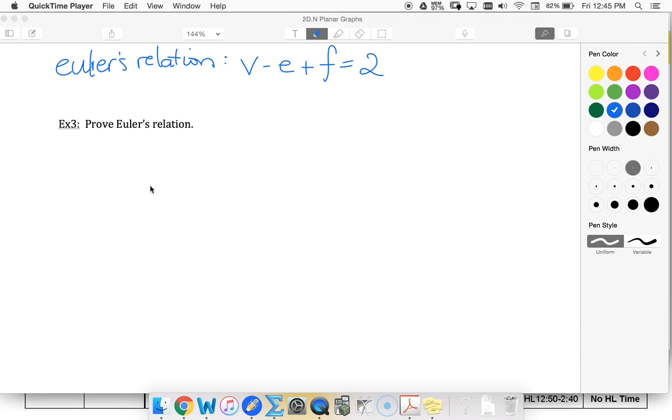When I gave you the definition of Euler's relation, we should have included that this is true for connected planar graphs. Remember, a connected graph does not have to be a complete graph. We just have to make sure that each vertex can somehow be connected to another one. There's a path between vertices always.